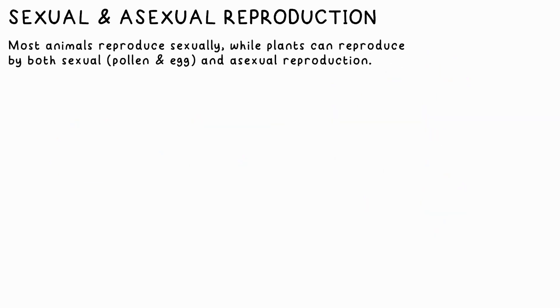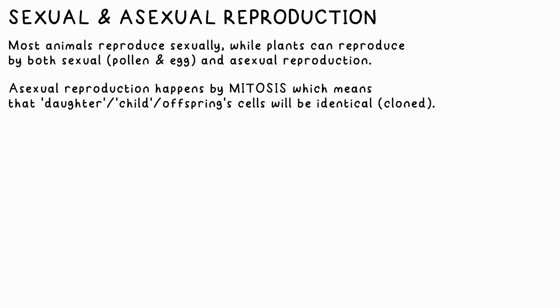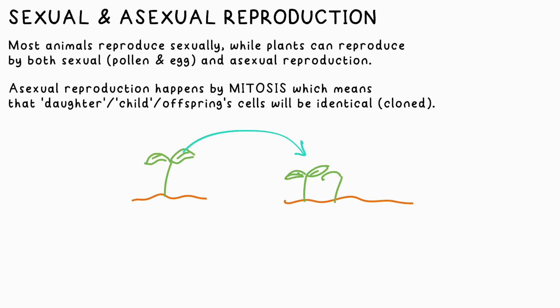Plants can also reproduce asexually. As this doesn't involve gametes, the daughter cells will be genetically identical, so a clone of the parent is made by mitosis.